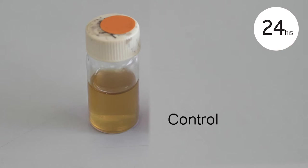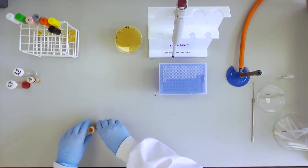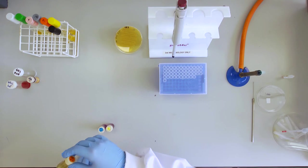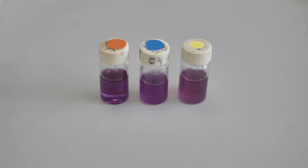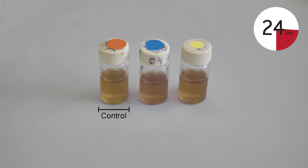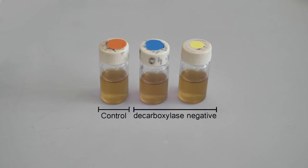Only if the control has turned yellow do you turn your attention to the other two tubes. In this particular sample take note of the following: The control is yellow meaning decarboxylation has begun. The tubes containing the amino acids lysine and ornithine are yellow. Meaning this particular strain of bacteria is decarboxylase negative for both lysine and ornithine.